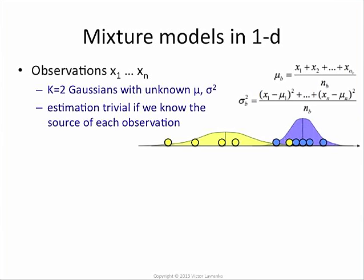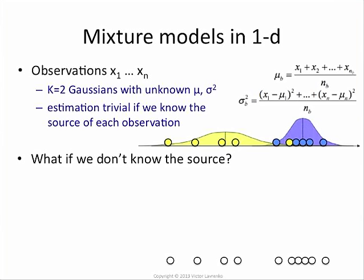This is based on knowing which point came from which distribution. But what if you have just a bunch of data points and you don't know which came from the yellow and which came from the blue? Can we fit the Gaussians now? That's a lot trickier, because we don't know which ones go where. This is the situation in mixture models: you have a bunch of data points and you suspect they came from k different Gaussians, but you have no idea which points came from which Gaussian. You need to fit the parameters without knowing which point came from where.